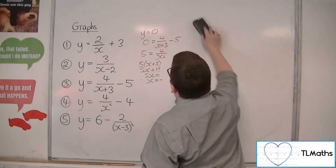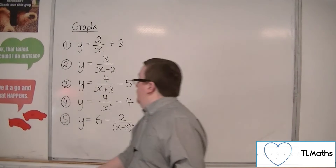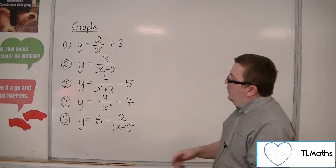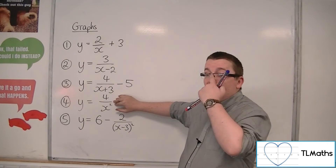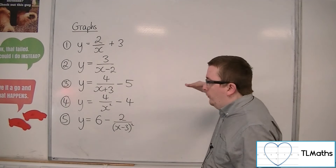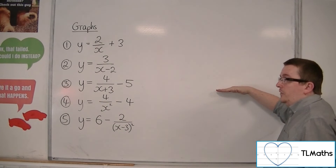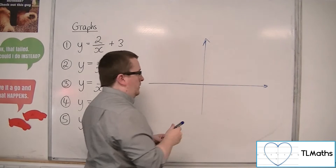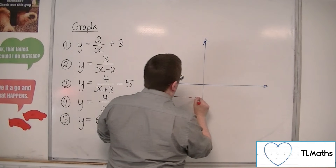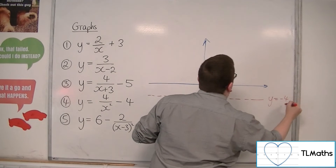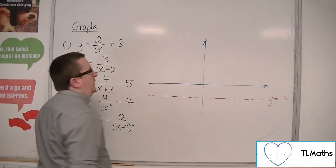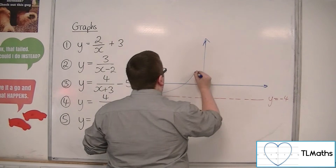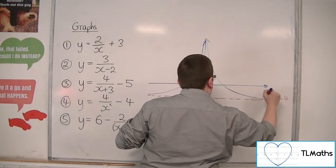Number 4: y equals 4 over x squared minus 4. We know what 4 over x squared looks like, and we're dropping it down 4 units. The horizontal asymptote at the x-axis drops down 4 units to y equals minus 4. The vertical asymptote at the y-axis maintains its position, so the curve approaches both of these asymptotes.